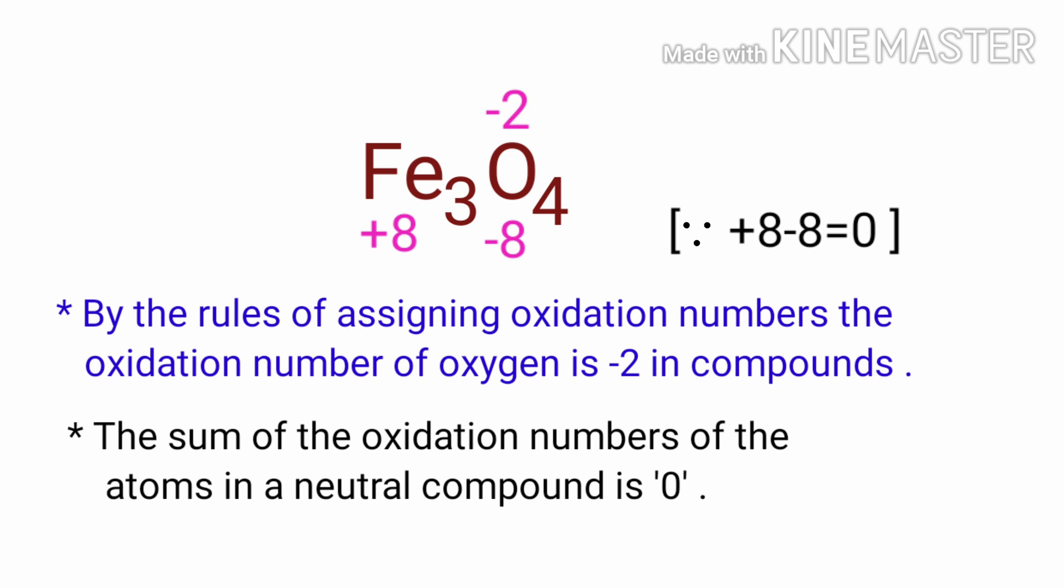In the Fe3 element, there are 3 iron atoms present. So we can write the oxidation number of iron is plus 8 by 3.